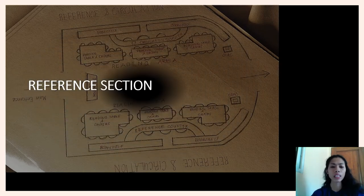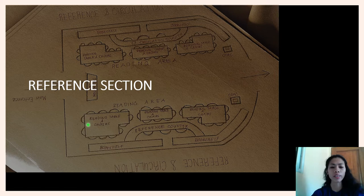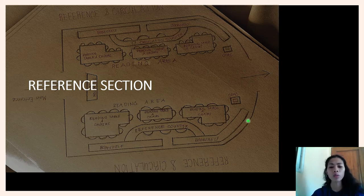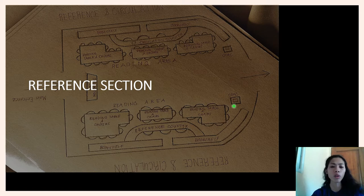The reference area — as you enter the library, it is on the right side. The space is wider in scope and involves reading areas, counters, and bookshelves where general reference materials are stored. There is also an OPAC where students can search for materials they need in the reference area.